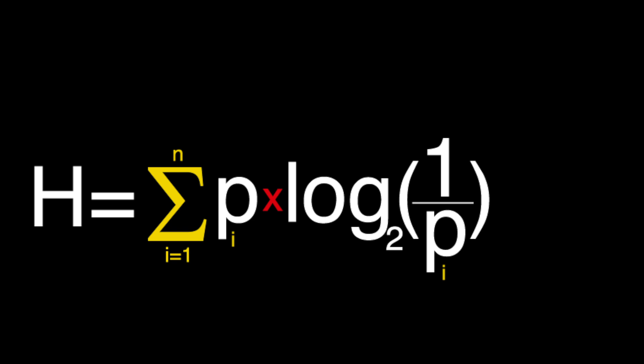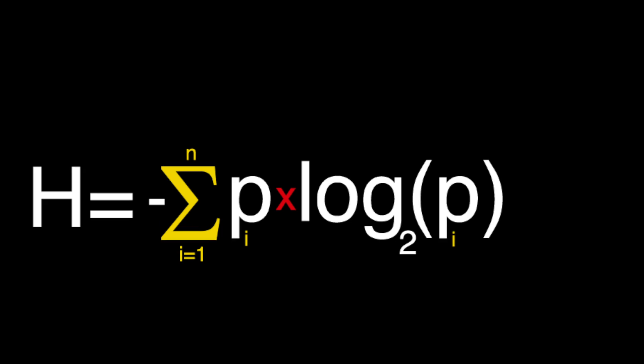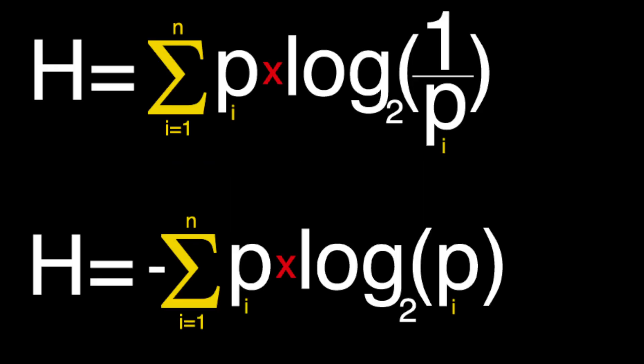And Shannon writes this slightly different, which just inverts the expression inside the logarithm, which causes us to add a negative, though both formulas give the same result. So let's summarize.